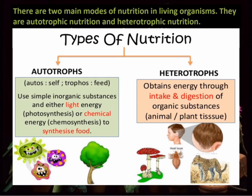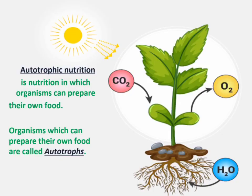Autotrophic nutrition: Auto means self and trop means nutrition. Thus, autotrophic means self-nutrition. Autotrophic nutrition is nutrition in which organisms can prepare their own food. Organisms which can prepare their own food are called autotrophs. Autotrophs are also called primary producers. For example, all green plants and some bacteria prepare their own food by autotrophic mode of nutrition. Thus, they are autotrophs.